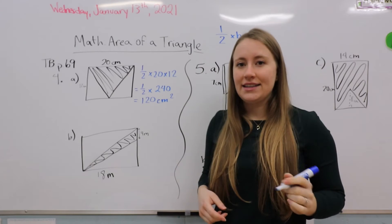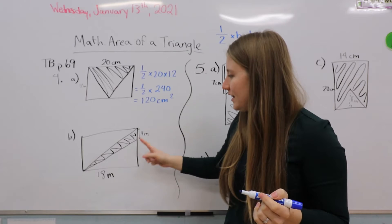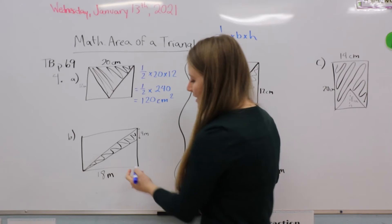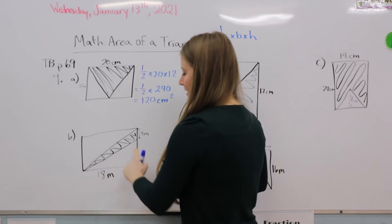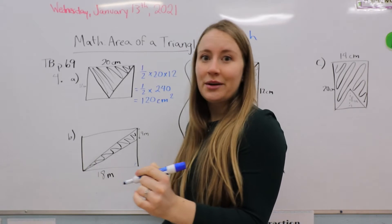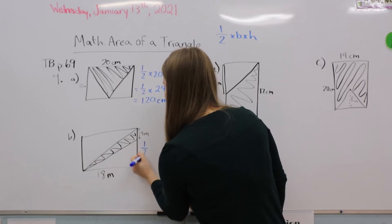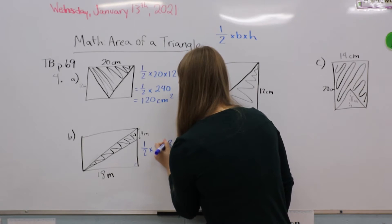For the second question, you'll see again we've been given the measurement that indicates that's going to be our base. If you'll notice, we know that this rectangle has a right angle here and this side is the same height as the triangle. So that means that our 18 meters is what we're going to be working with.